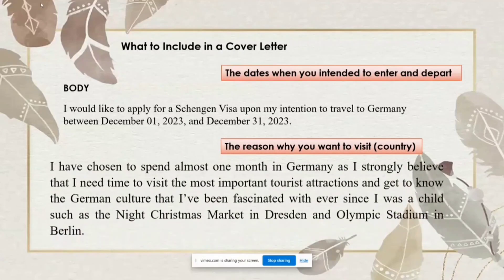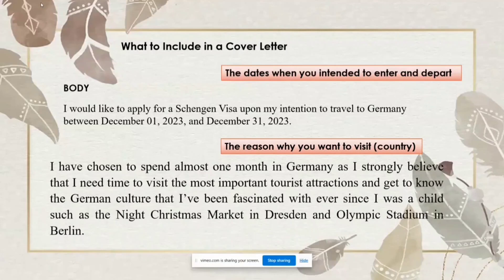Followed by the reason why you want to visit that country. You need to write a powerful statement that makes the consul believe your intention. For example, I wrote: 'I have chosen to spend almost one month in Germany as I strongly believe I need time to visit the most important tourist attractions and get to know the German culture that I've been fascinated with ever since I was a child, such as the night Christmas market in Dresden and the Olympic Stadium in Berlin.' Telling such a story is a powerful communication tool because the officers can understand who you are and why you should get a visa.